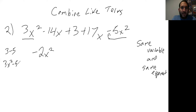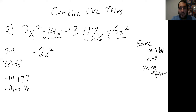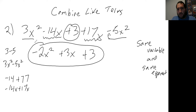Next we look for another set of like terms. The next term is negative 14x. We find the other x term: plus 17x. Negative 14 plus 17 leaves us with positive 3x. Then we have plus 3 — is there any other number without a variable? No. Bring it down, it stays as is. So our resulting expression is negative 2x squared plus 3x plus 3.